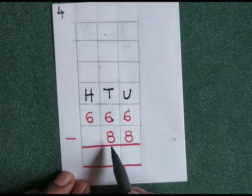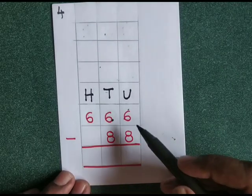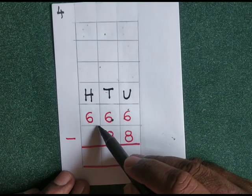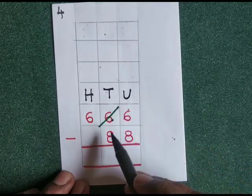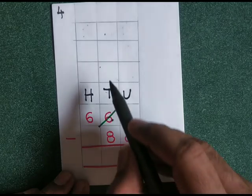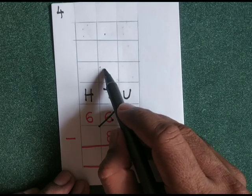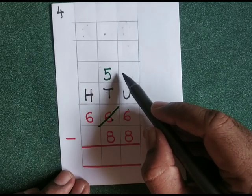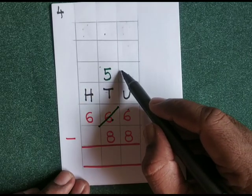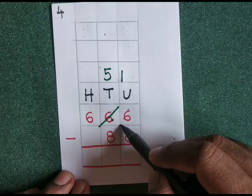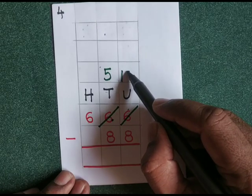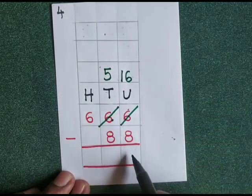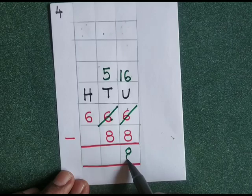666 minus 88. 6 minus 8 — we can't do that, so we will borrow from the tens place. There are 6 tens; if you borrow 1 ten, you have 5 tens here. That 1 ten means 10 units; 10 units plus 6 units give us 16 units. 16 minus 8 is equal to 8.